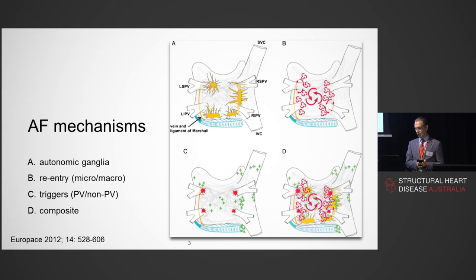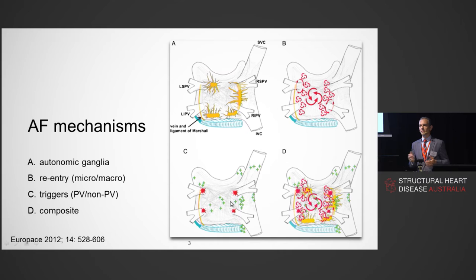These red stars are in the pulmonary veins — this is a posterior view of the left atrium with pulmonary veins, right atrium, SVC, and IVC. These focal triggers and drivers of atrial fibrillation: 95% or more originate in the pulmonary veins, which is why we focus on that region as a target of ablation.